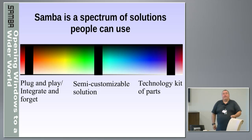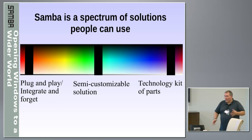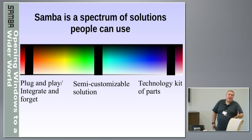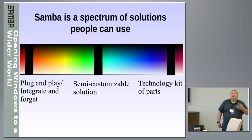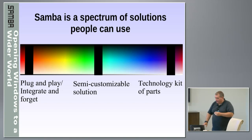All the way to the top, you can get basically very large vendors who have products based on Samba, obviously with a lot of value add on the back end. They understand it completely, make changes to it. They are actually the people who comprise the Samba team itself, really — the top end. People who use it as a technology kit of parts to build things.